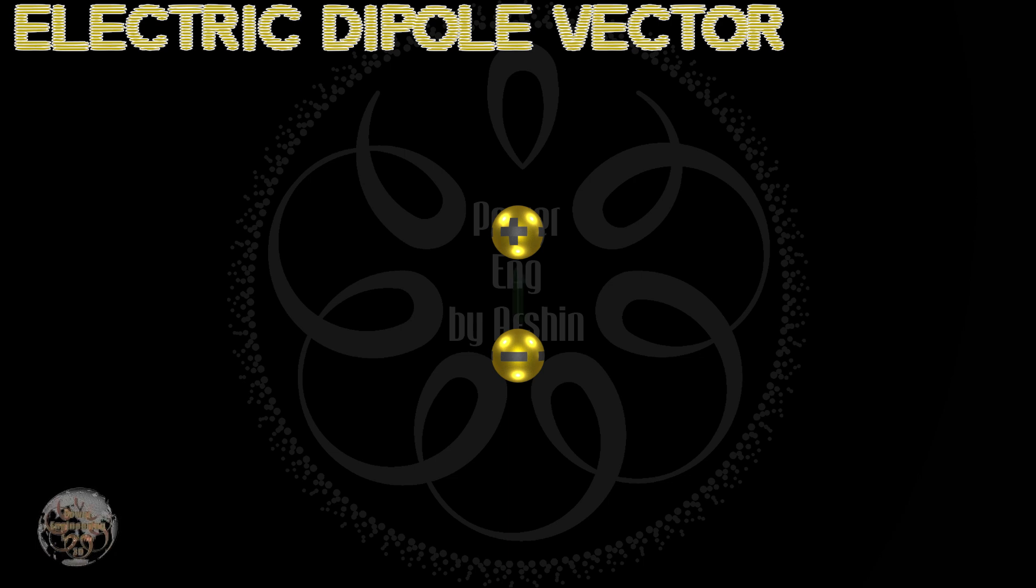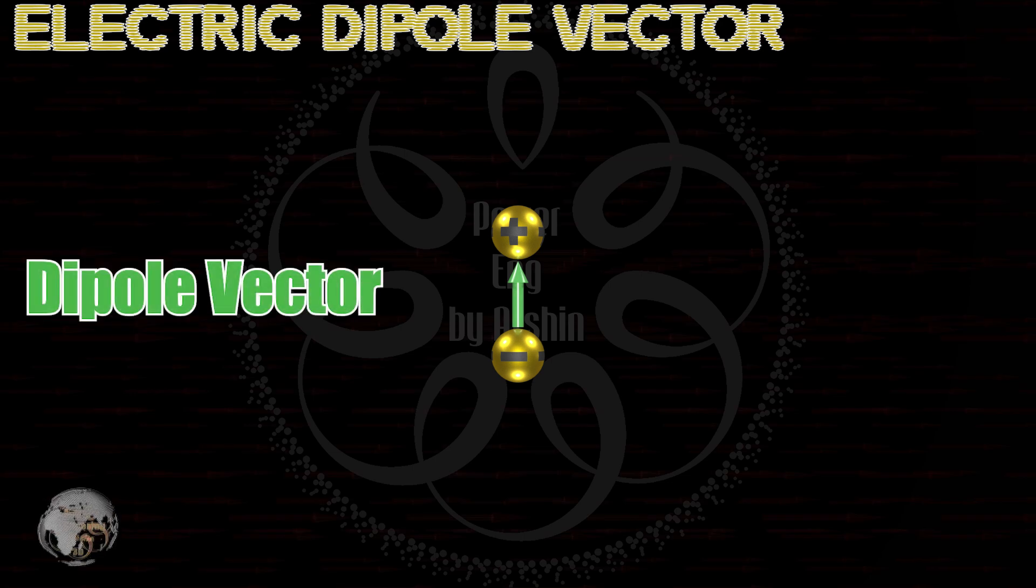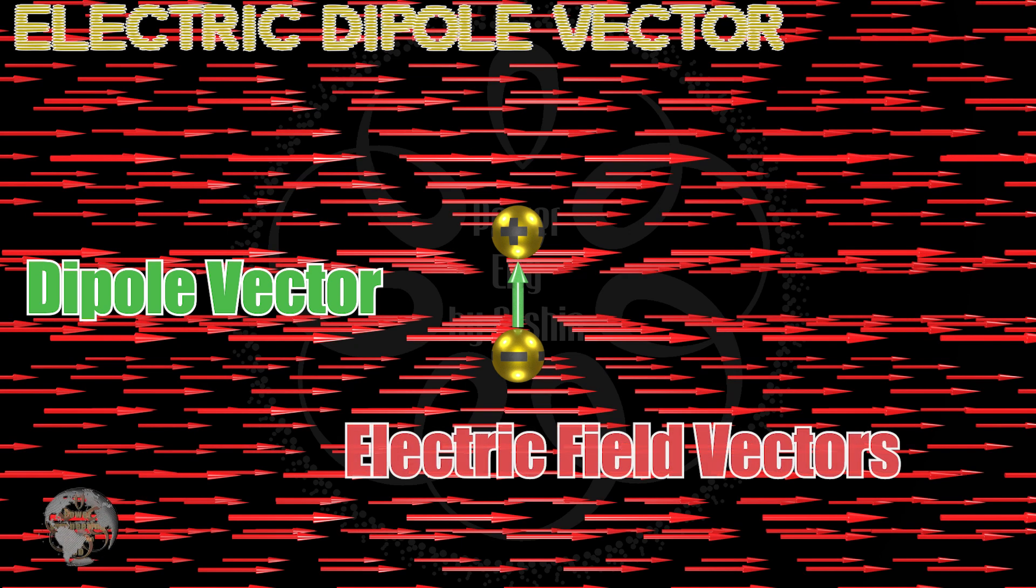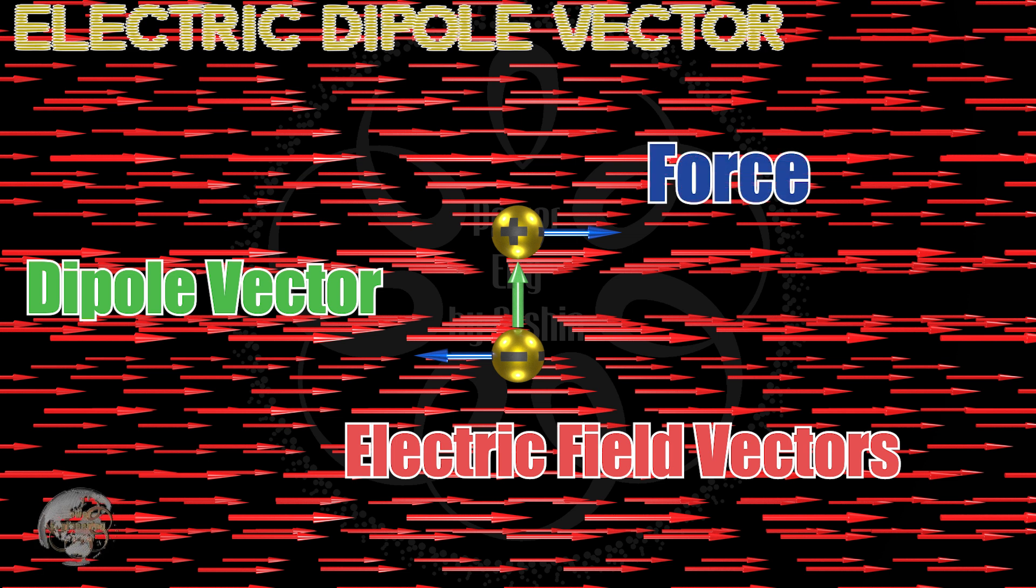An electric dipole is typically represented by a vector pointing from the negative pole to the positive pole. If this electric dipole is placed in an electric field, a force will act on it. As you can see on the screen, the forces acting on the dipole are not aligned in the same direction.